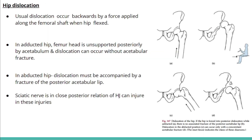Hip dislocation usually occurs backwards by a force applied along the femoral shaft when the hip is flexed. It can accompany an acetabular fracture or happen without one. When the hip is in adduction, there is no acetabulum to obstruct posteriorly, so dislocation can occur without fracture. But when the hip is abducted, the acetabulum obstructs the dislocation direction, so dislocation usually accompanies a fracture of the posterior acetabular rim. In posterior hip dislocation, the sciatic nerve is in greater danger of being injured.